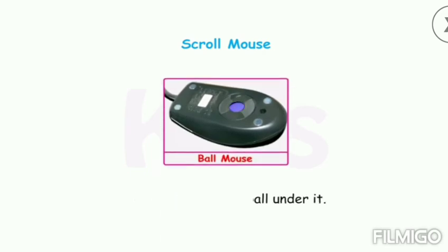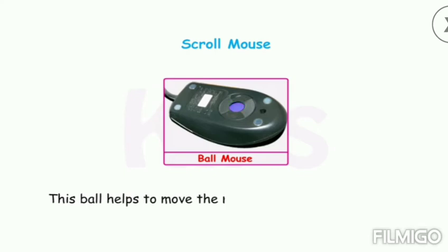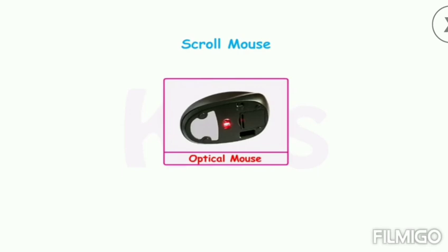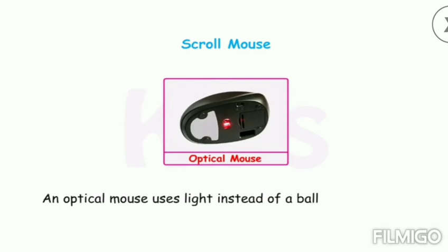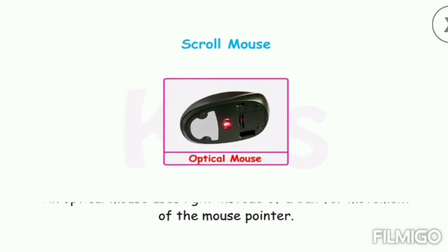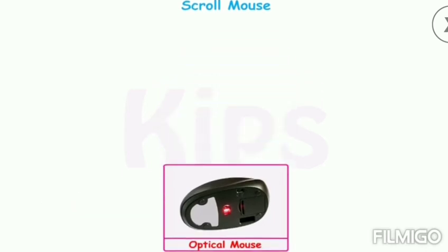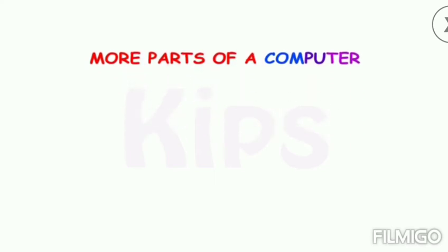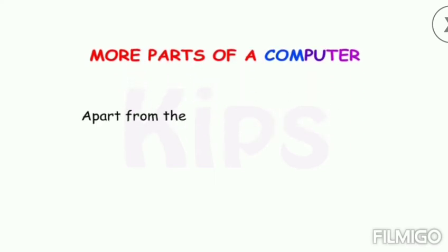A scroll mouse is of two types. A ball mouse has a ball under it — this ball helps to move the mouse pointer on the screen. An optical mouse uses light instead of a ball to move the mouse pointer.